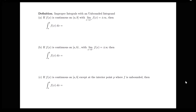In this video, we'll be looking at the definition of improper integrals with an unbounded integrand. This is our second type of improper integrals. We've already looked at the case where we have an integral that's improper because it has limits with infinity or negative infinity in them. But now we're going to be looking at examples like the integral from 0 to 1 of 1 over x dx, where we have a vertical asymptote either in the middle of the interval or at one of the endpoints.